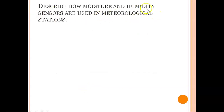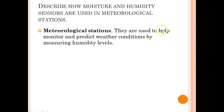Describe how moisture and humidity sensors are used in meteorological stations. They are used to monitor and predict weather conditions by measuring humidity levels.